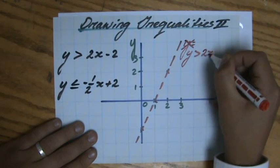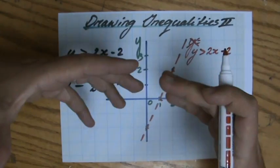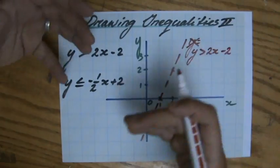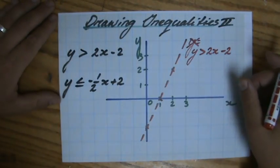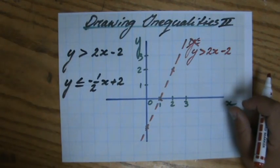Now the question will then say shade the area you're interested in or shade the area you're not interested in, but that's more a linear programming question. Check my videos about linear programming to see which part to shade.